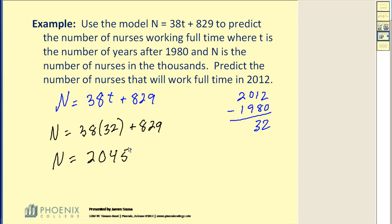Now, again, a common mistake is to say the answer is 2,045 nurses. But remember, the nurses is in thousands. So to find the true number of nurses, we would have to multiply this by 1,000. And this would be the number of nurses working full-time.